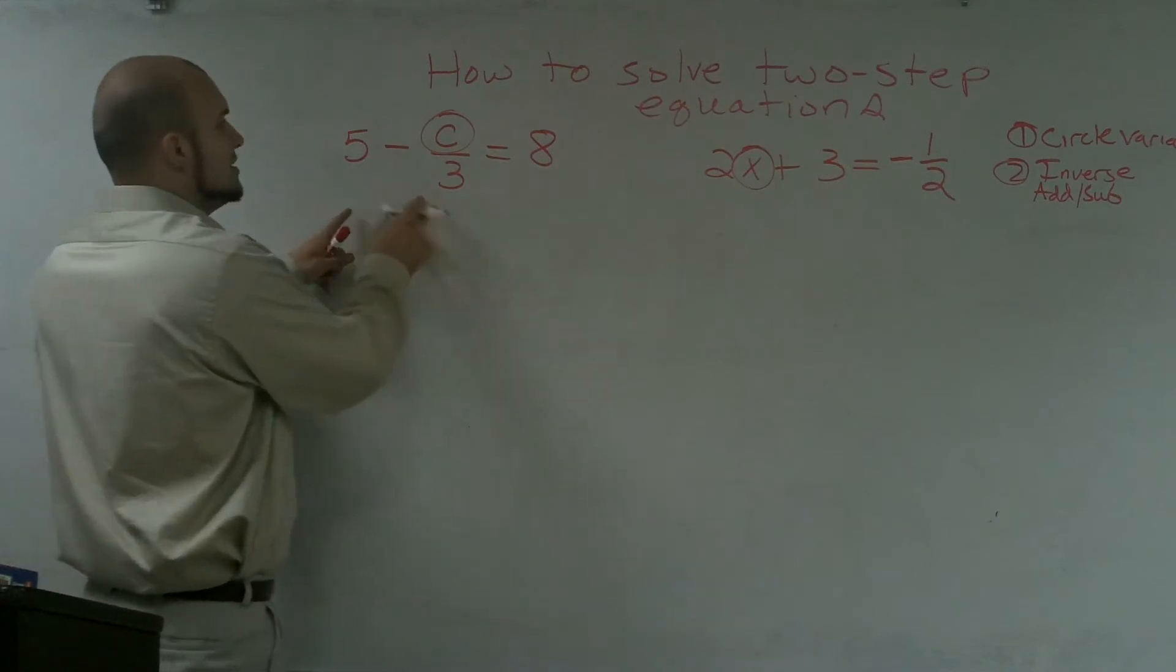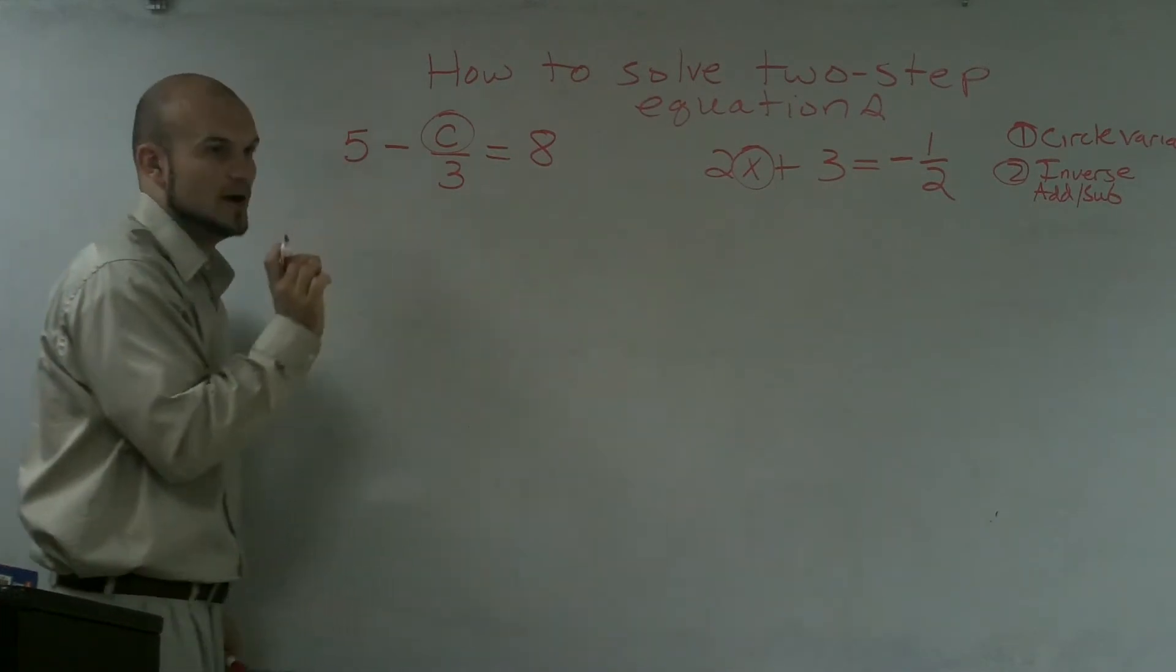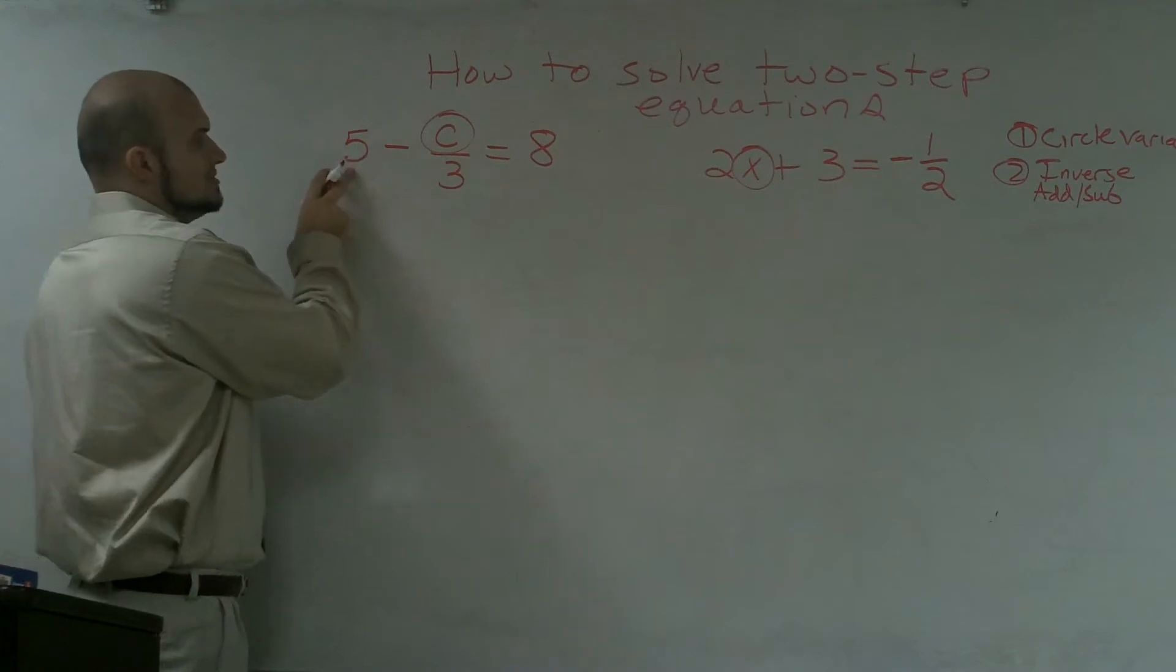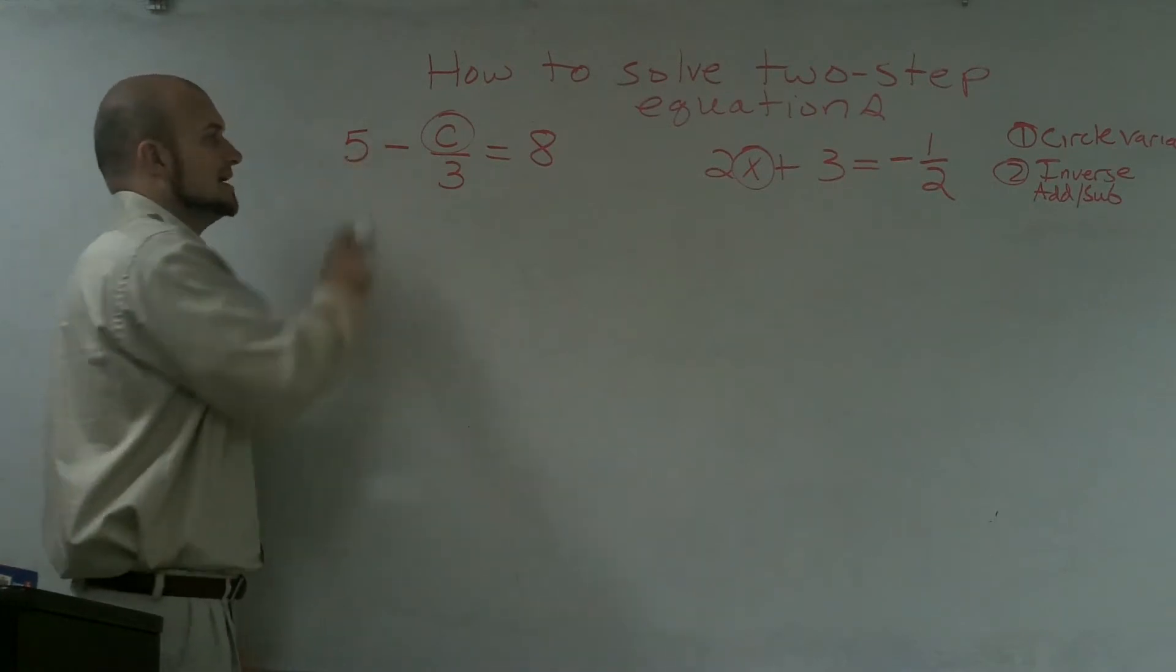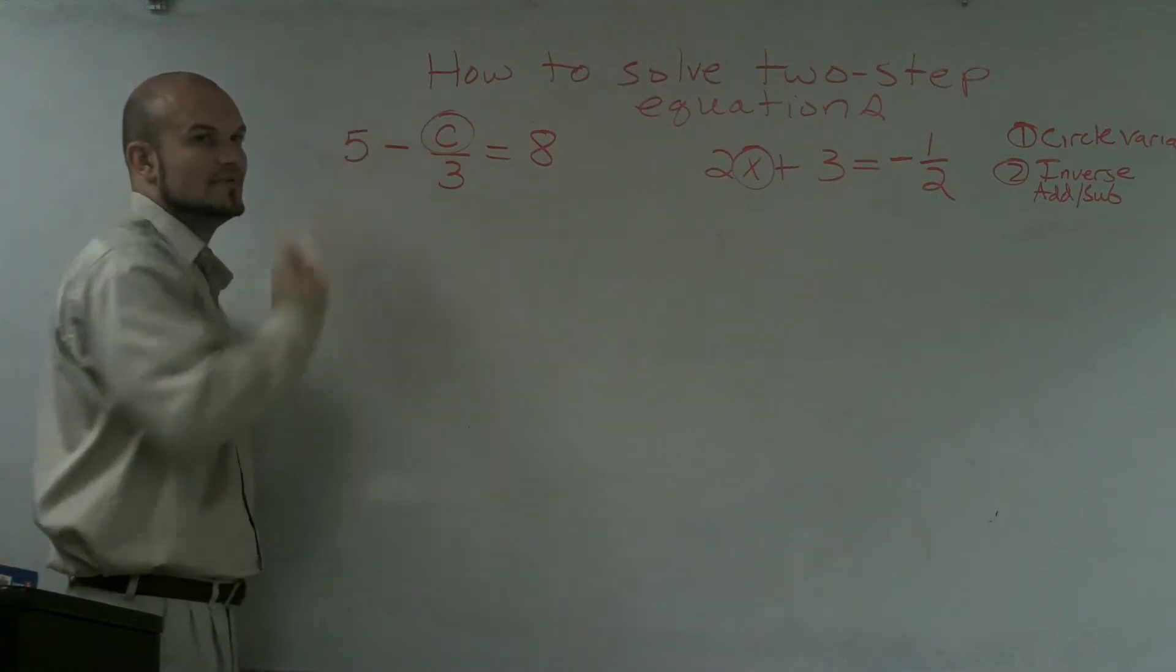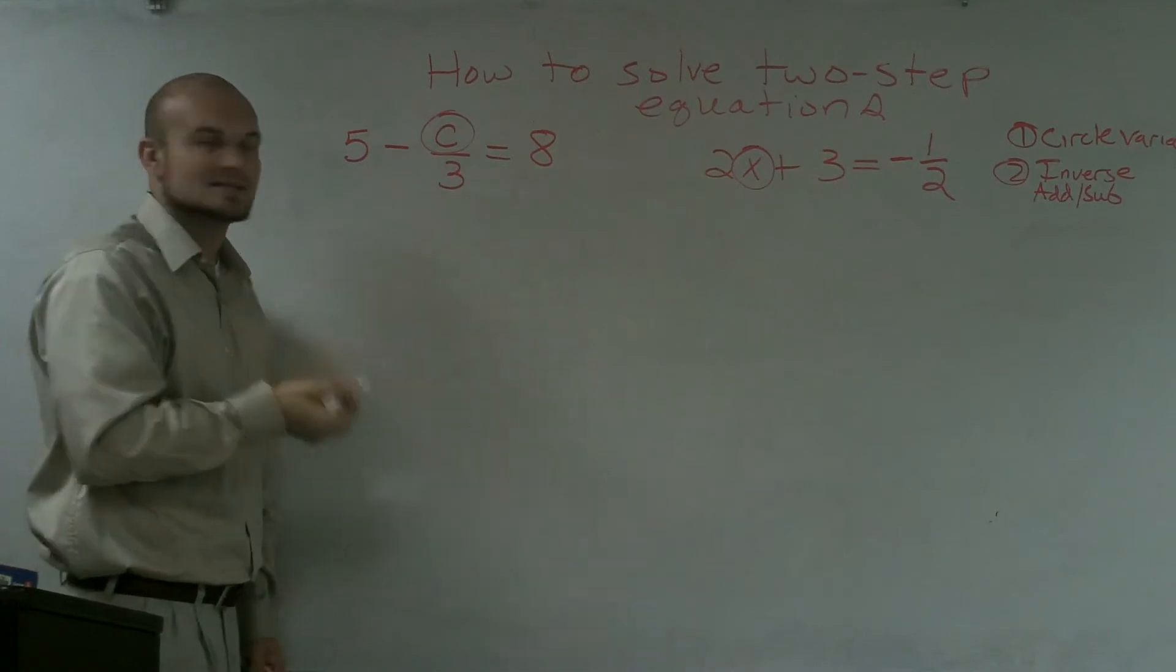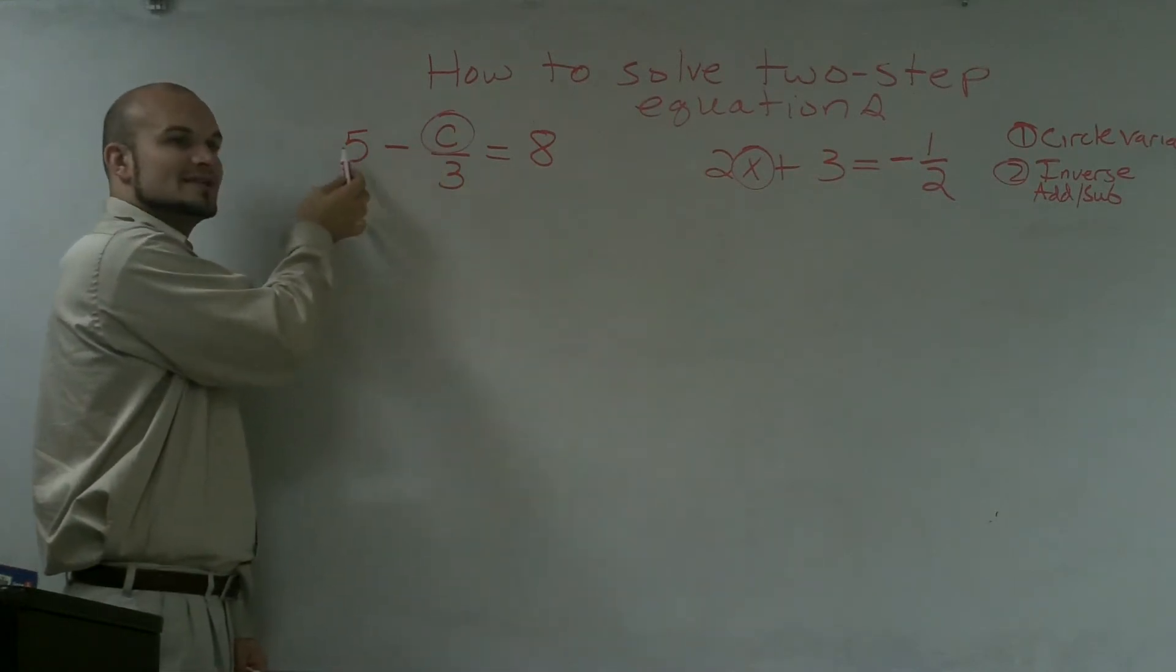So here I notice that I have a 5. Now, here's a confusing part. A lot of people say, well, since I have the subtraction sign, the 5 is subtracted from the variable. But that is incorrect. The variable is subtracted from the 5.